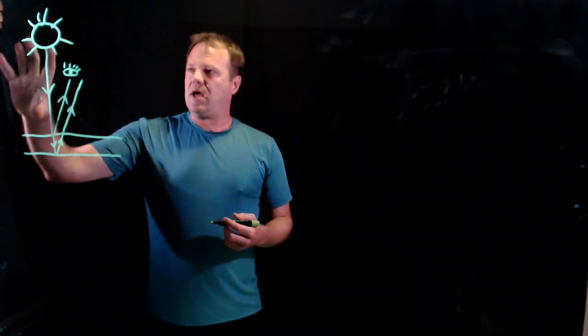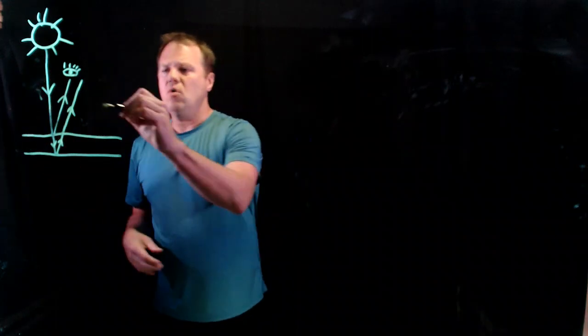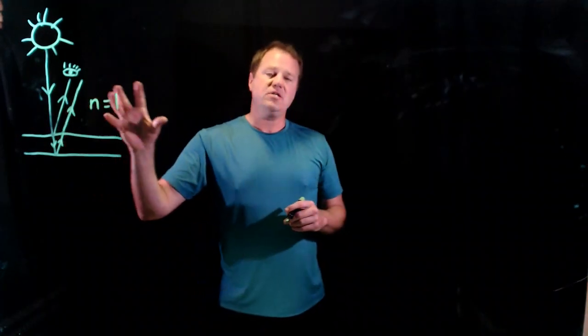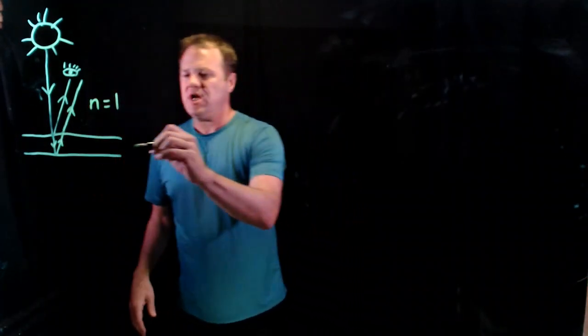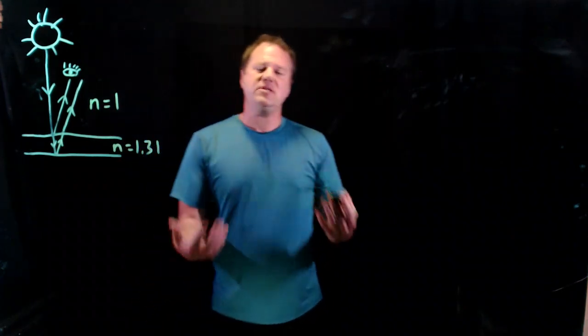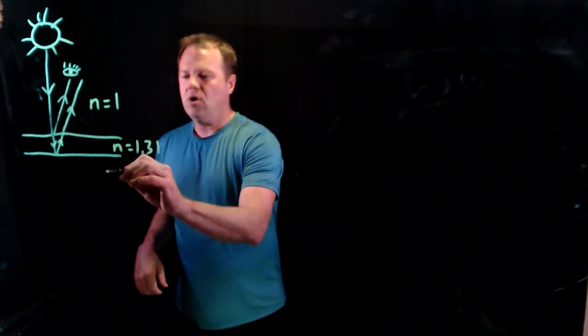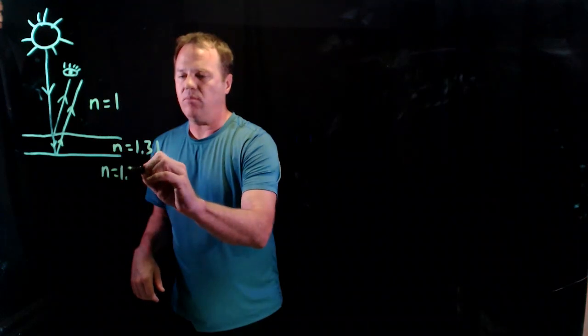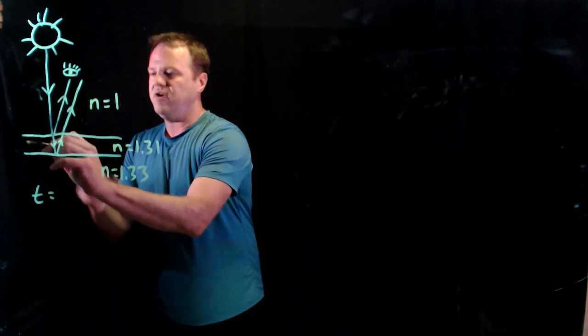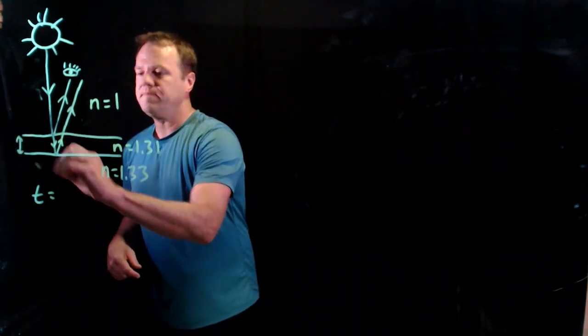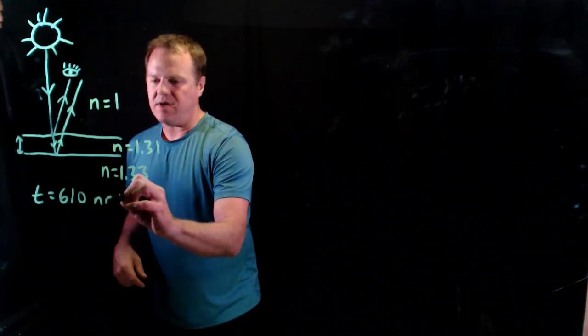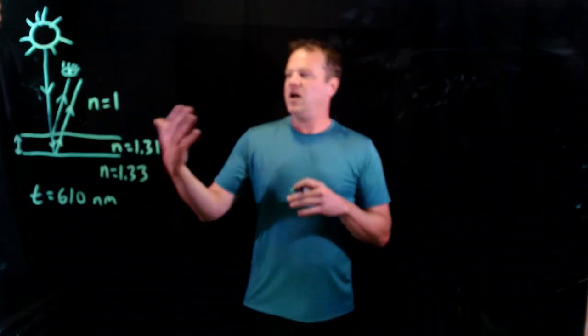So assuming that this light is coming through air, where the index of refraction is about one, and then let's say that this thin film is made of ice, which has an N of 1.31, and then let's say that this ice is on liquid water, where N is 1.33. And furthermore, we know that the thickness of the thin film, so this distance right here, the thickness of the thin film is 610 nanometers. So a very thin layer of ice on top of water.